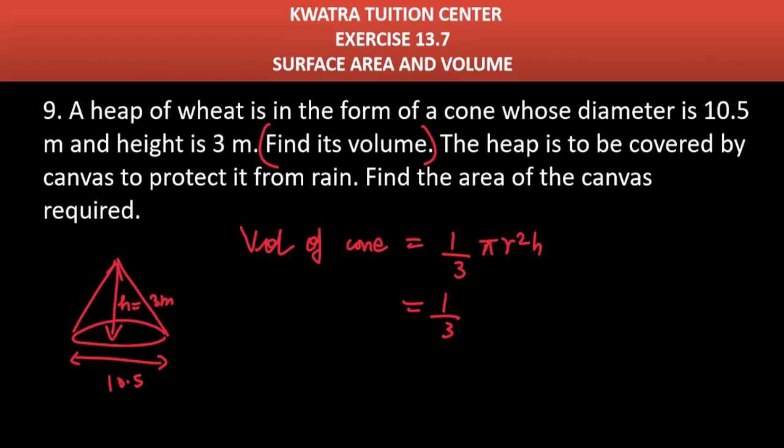Which will be volume of cone = 1/3 πr²h. 1/3 as it is, π value will be 22/7, r² - r we will write as 10.5 divided by 2 because diameter is half, so you have to mention 10.5 divided by 2.